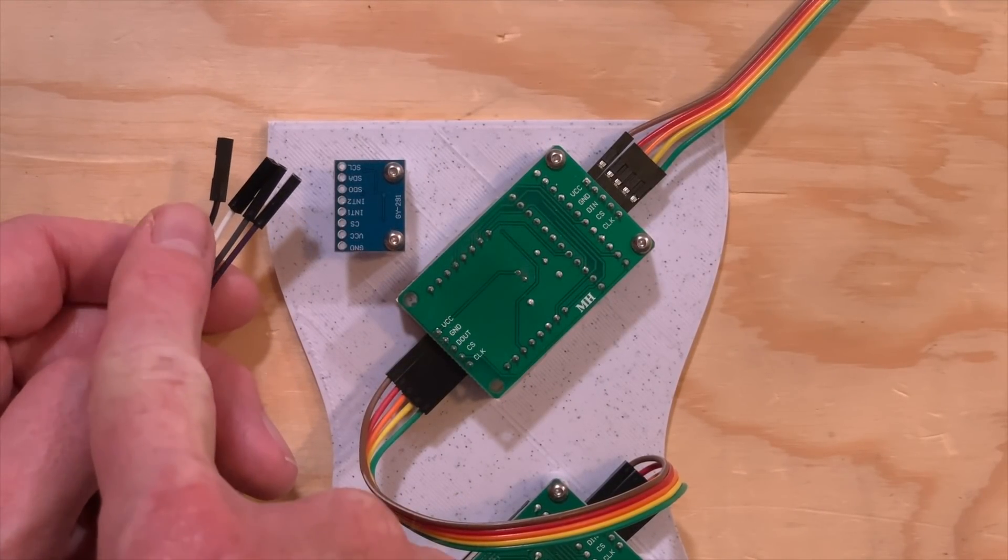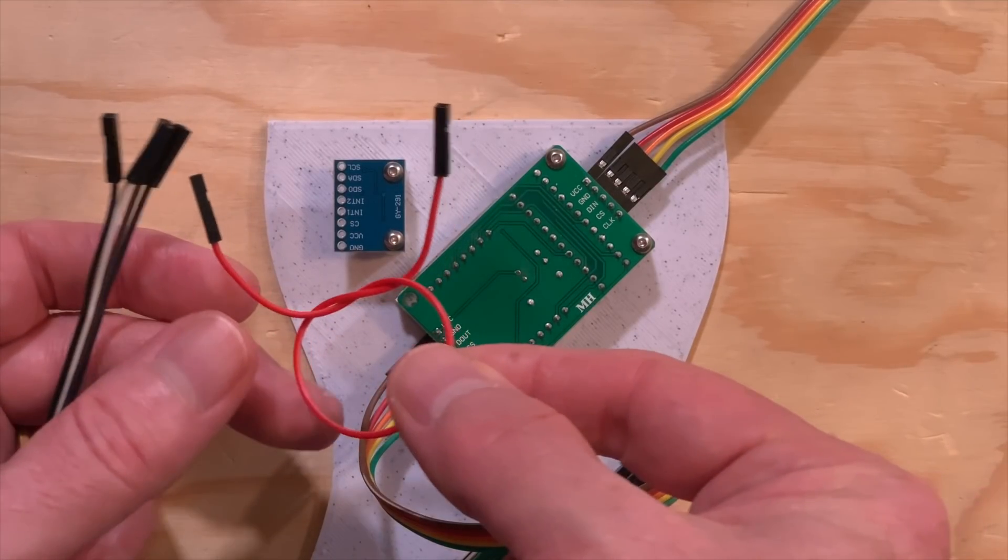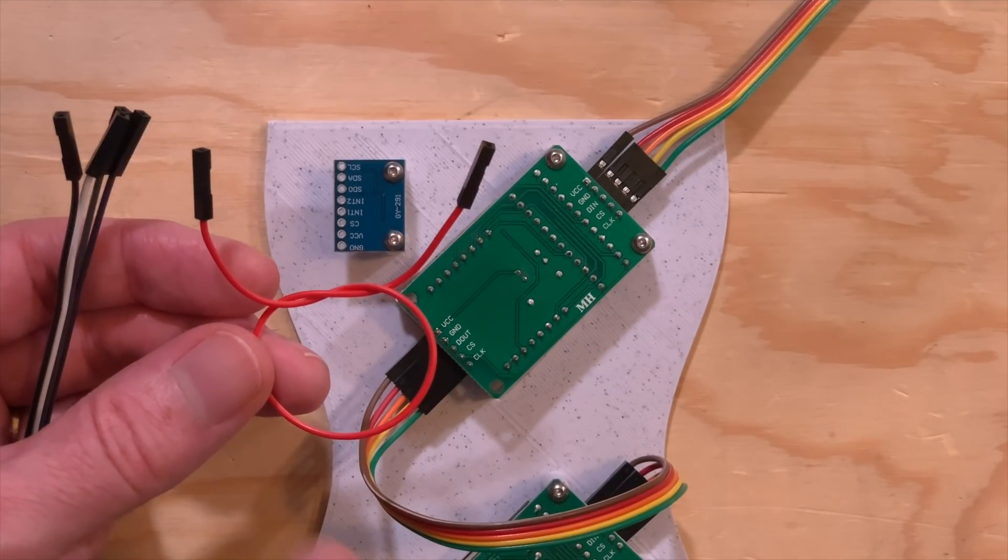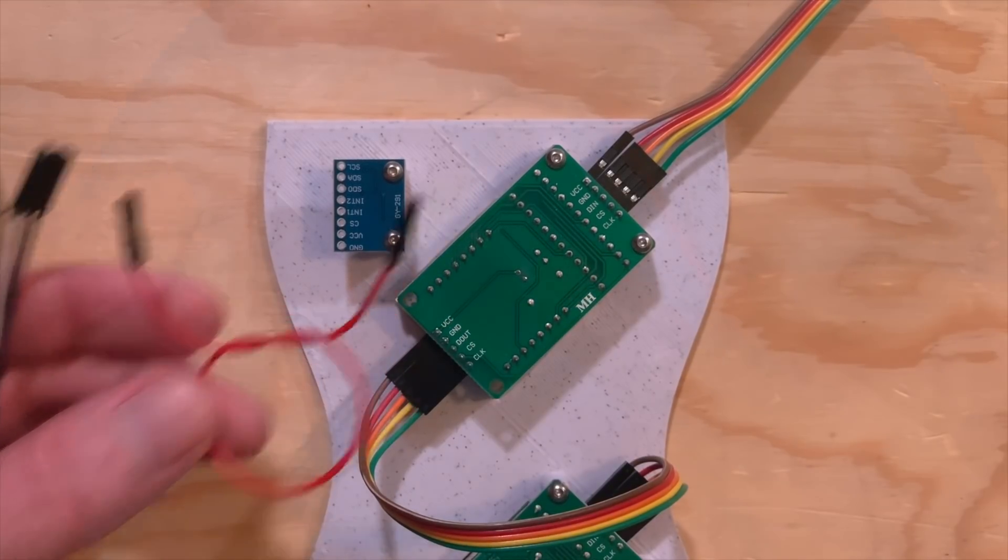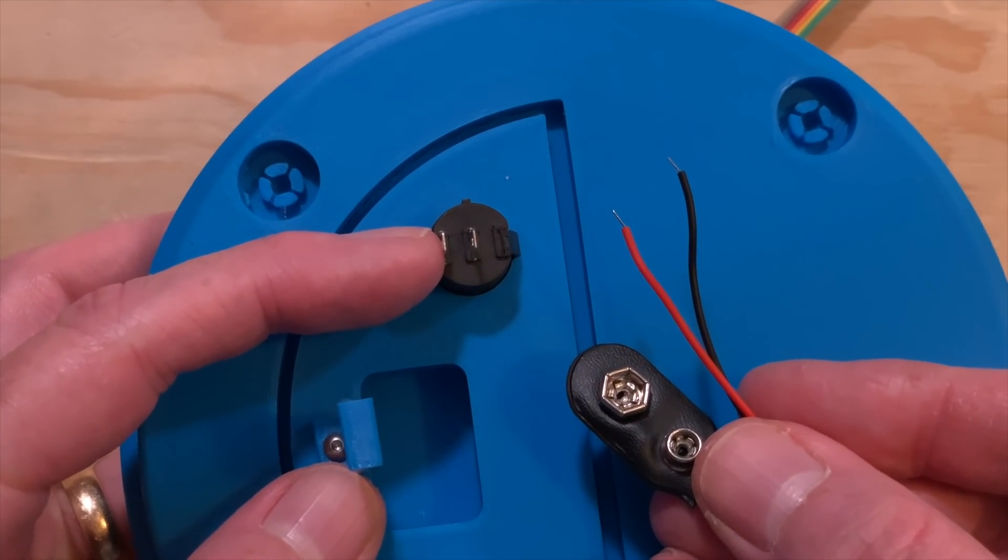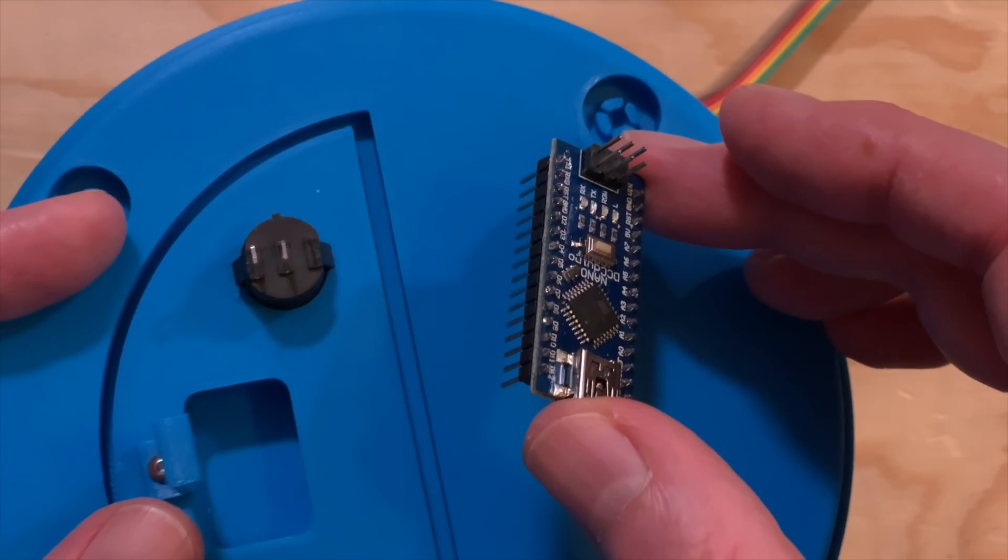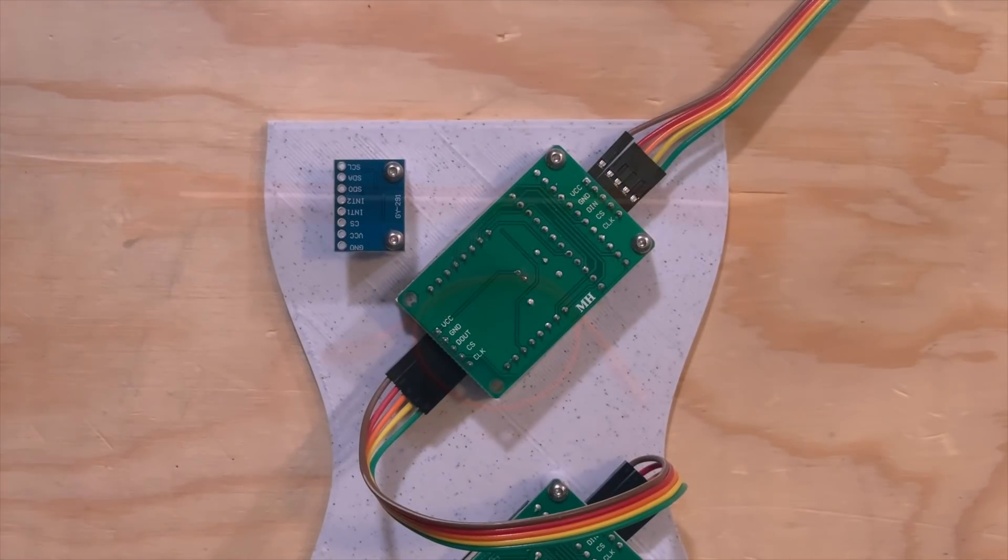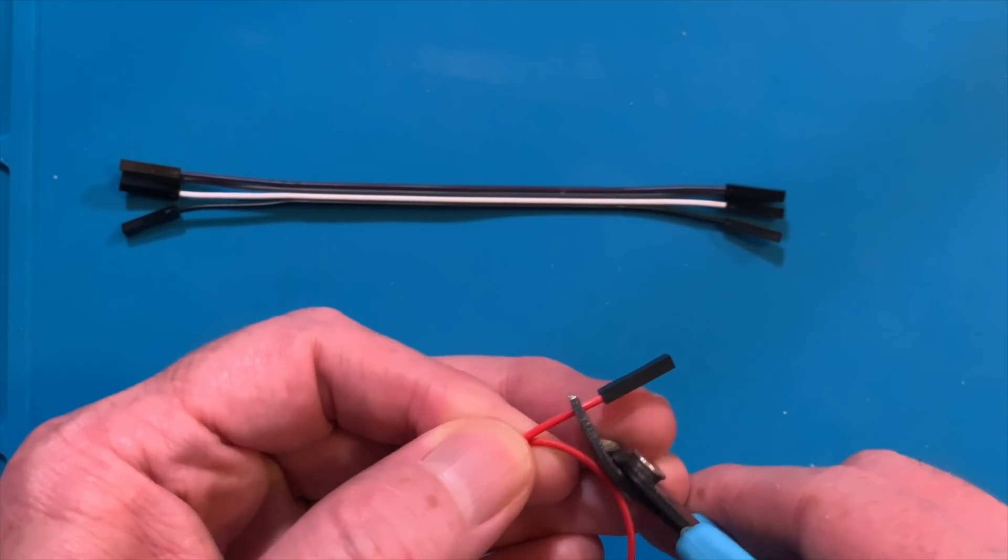The other end of that cable will get connected to the Arduino Nano in just a little bit. I want to do all the connections to the Nano at the same time. Right now, though, it's time to solder. We'll need to solder the ribbon cable with four wires to the accelerometer. And I'm adding a red wire from my own private stock.